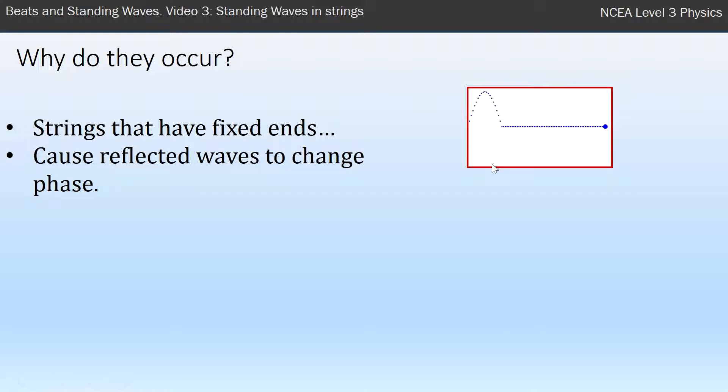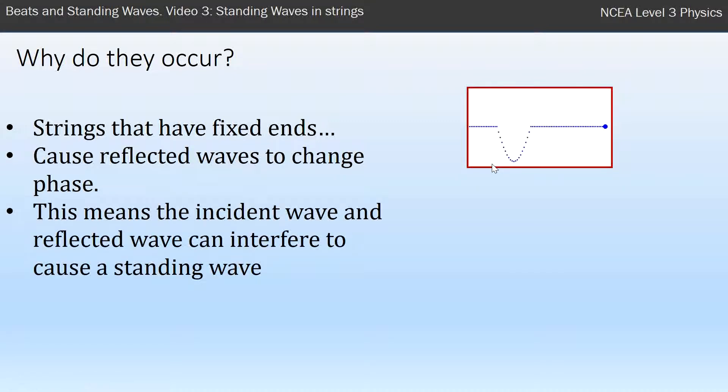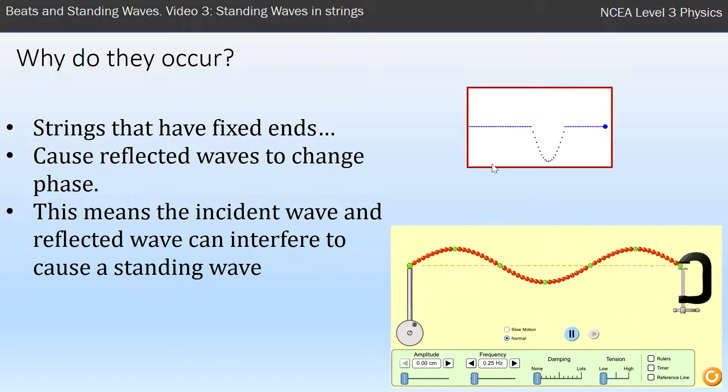And what that means is if I was to do multiple of these ones, the incident waves—that means the waves going to the right—and the reflected waves, which are now changed phase, can interfere with each other and that can cause a standing wave.